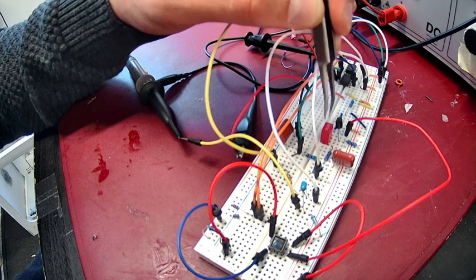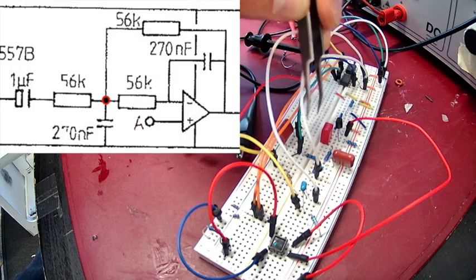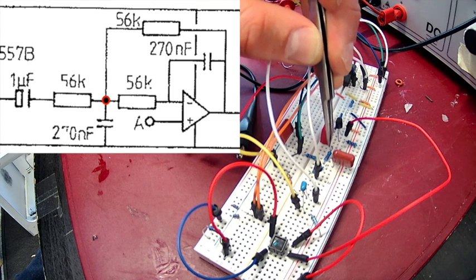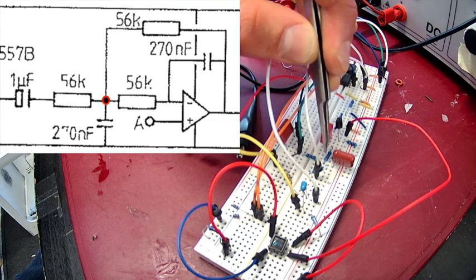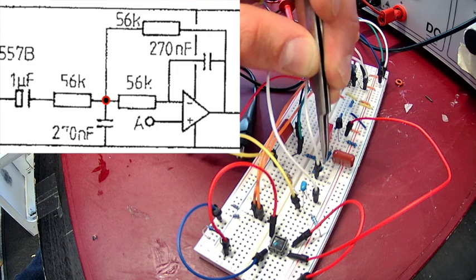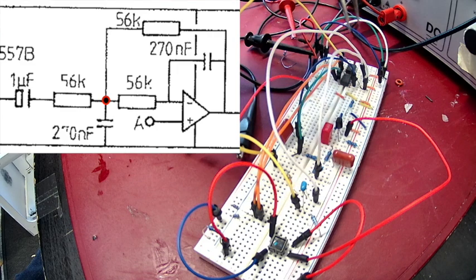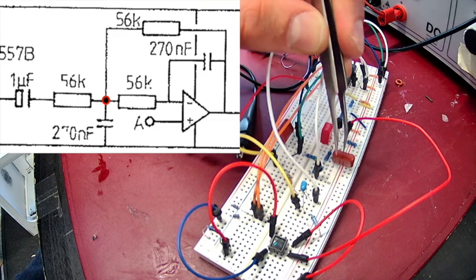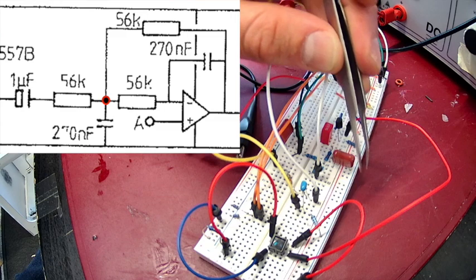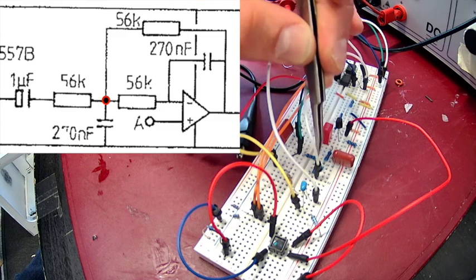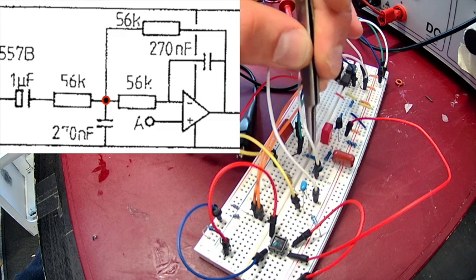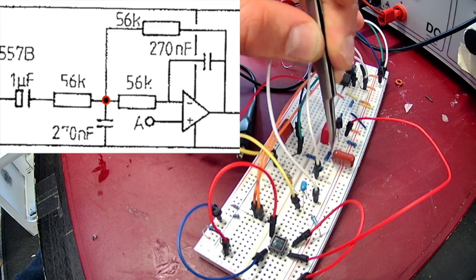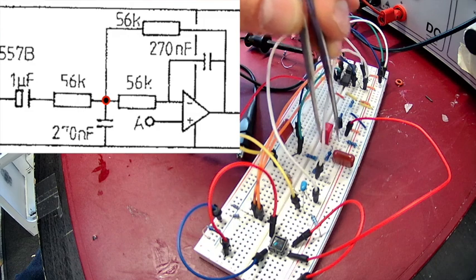And through a 1 micro farad capacitor to a 56 kilo ohm resistor here. And that resistor goes down and comes to a node where we have three different branches. So from this node we go first to a 270 nanofarad capacitor to ground. And then we go through two identical 56 kilo ohm resistors as the one that we saw before to two separate jumpers.